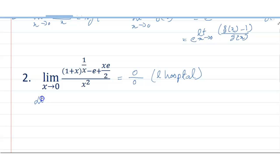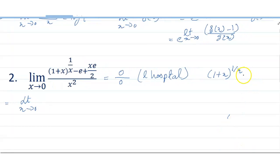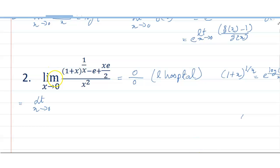The limit can be written this way: limit x tends to 0 of (1 plus x) whole to the power 1 by x equals e to the power log of (1 plus x) by x. So I write it as e to the power log(1 plus x) by x.